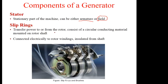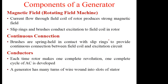Then we also have the slip rings, which transfer power to and from the rotor. If the EMF is in the coils, then for us to drive a load, we need those conductors to transfer the power. So the slip rings are electrically connected to the rotor windings but insulated from the shaft. The rotor, which is also on the shaft, is driven by the prime mover. Then we have a magnetic field which is produced.